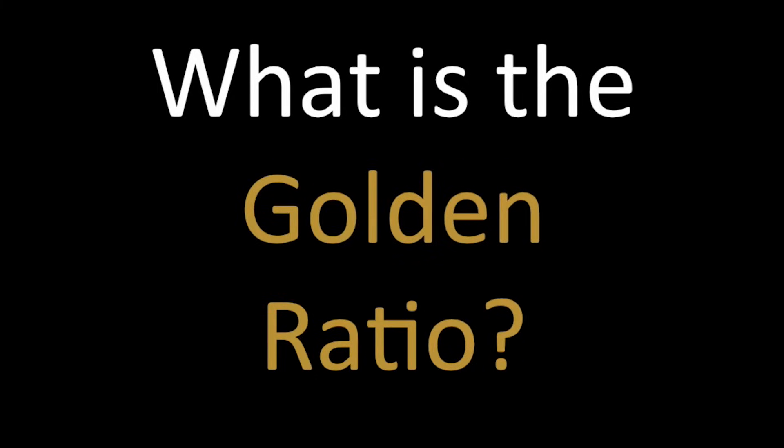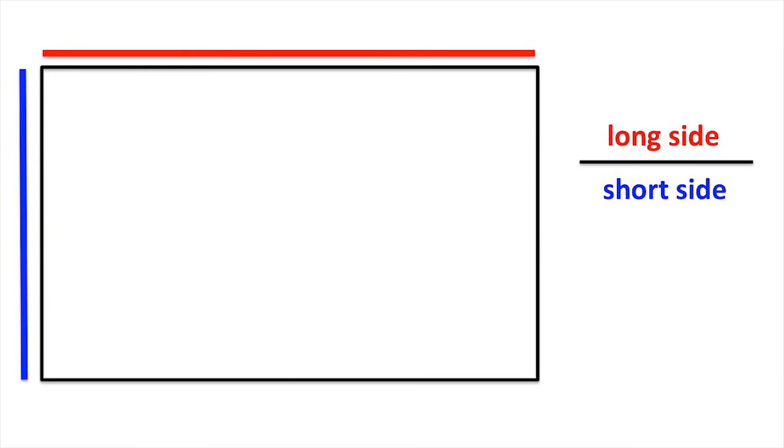What is the golden ratio? It's the ratio of sides of a special rectangle, a golden rectangle. If you cut off a square, the leftover rectangle has the same proportions as the original rectangle.